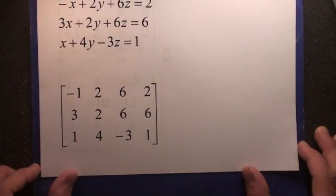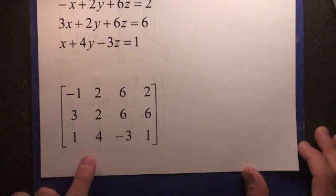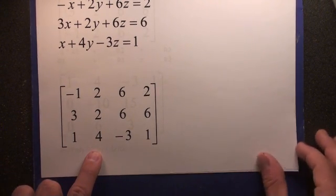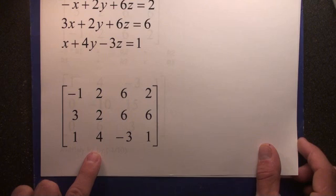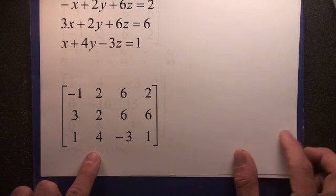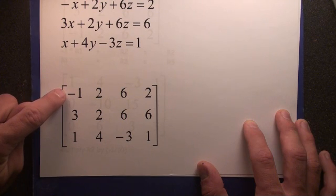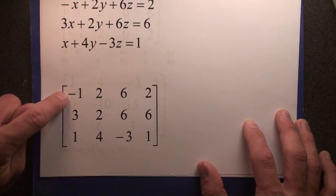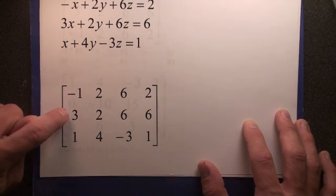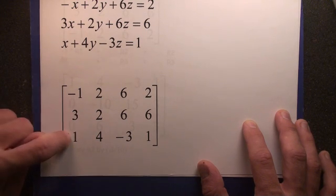The method is simply to change the system to a matrix. Step one. Then our next goal is to make this entry in the matrix a 1. Then we're going to make these two 0s.